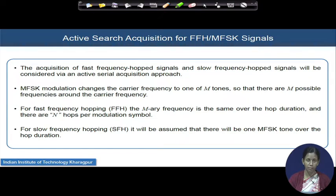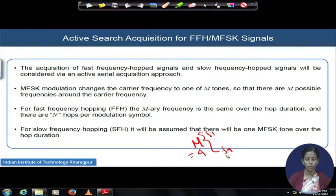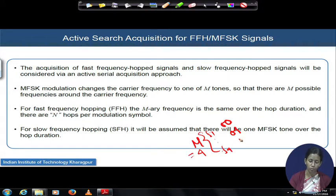MFSK modulation changes the carrier frequency to one of M tones. If M equals 4, we have frequencies F1 to F4. For data '00' we may transmit on frequency 1, '01' on frequency 2, '10' on frequency 3, and '11' on frequency 4. These are the M possible frequencies around the carrier over which MFSK modulation happens.